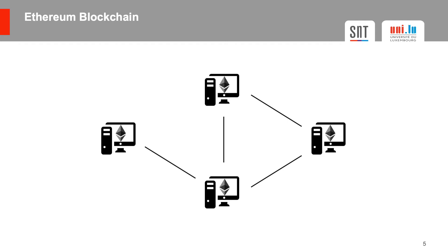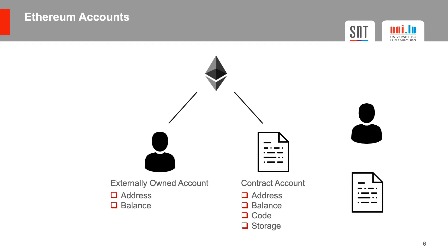Ethereum is a public blockchain similar to Bitcoin which consists of a peer-to-peer network of mutually distrusting nodes. There are two different types of accounts in Ethereum: user accounts, also known as externally owned accounts, and smart contracts, also known as contract accounts. Both types of accounts hold an address and a balance. The difference is that smart contracts may also run code and persist data across transactions.